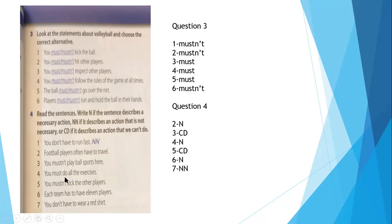Number four: you must do all the exercises — that's necessary, so N. Number five: you must not kick the ball or kick other players — we can't do that, so CD (can't do). Each team has 11 players — that's necessary, so N.